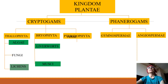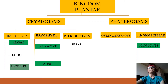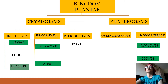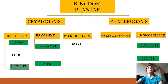Pteridophytes include all the ferns. Gymnosperms and angiosperms are the phanerogames. Angiosperms are further divided into two groups: monocots and dicots. In monocots, the number of cotyledons in a seed is one, and in dicots, the number is two. Monocots also have parallel venation and dicots have reticulate venation.